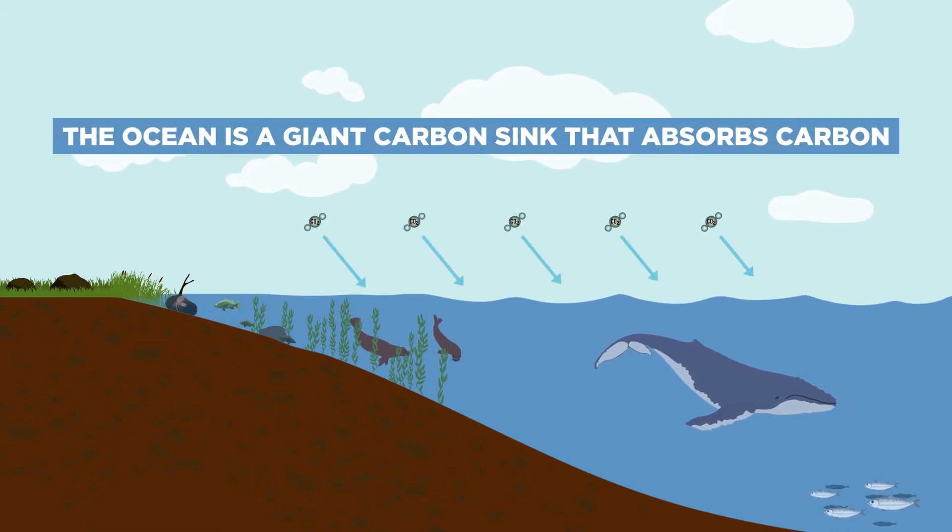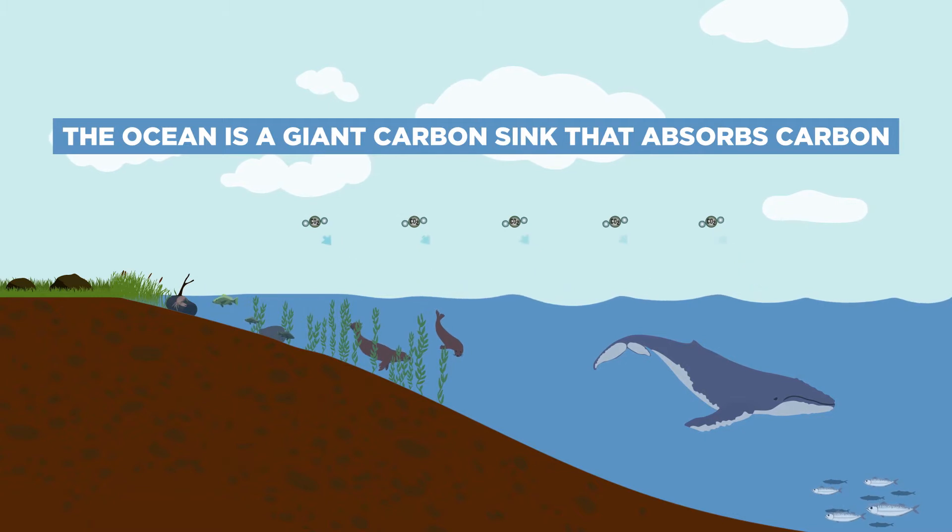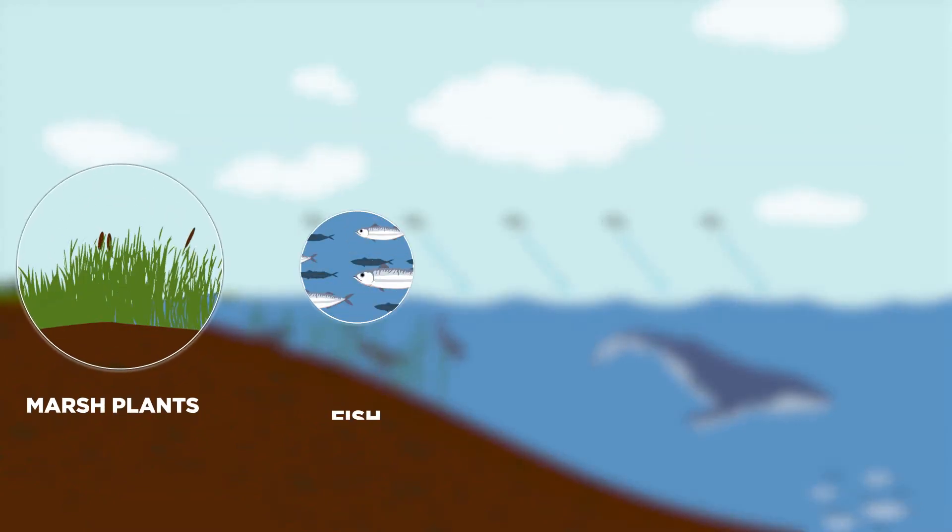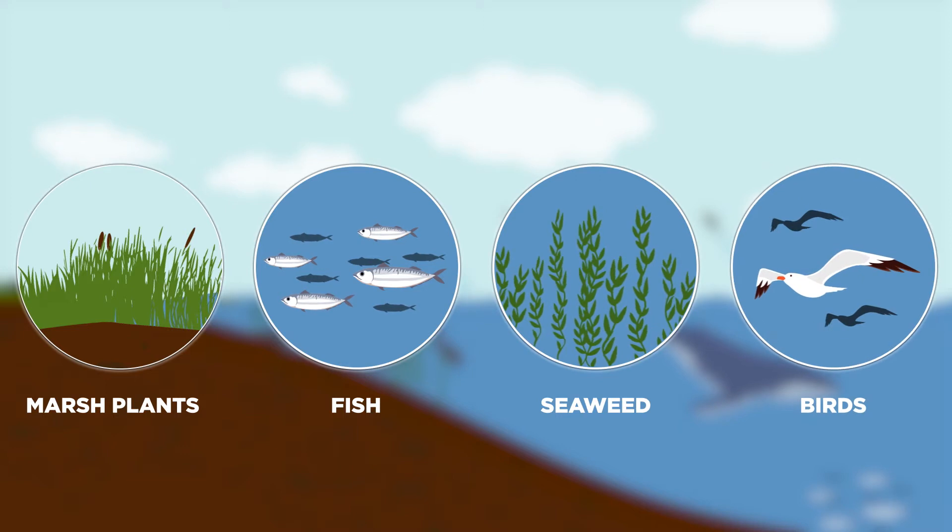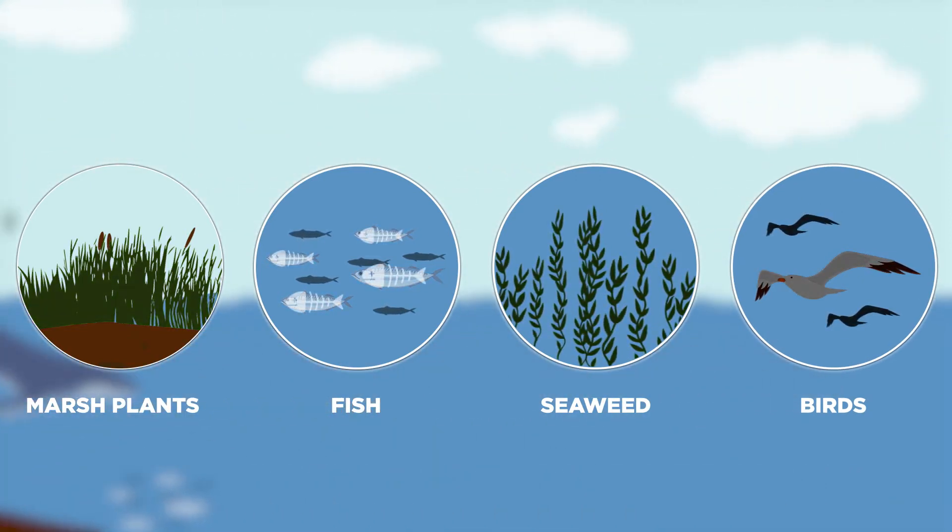The ocean is a giant carbon sink that absorbs carbon. Marine organisms from marsh plants to fish, from seaweed to birds, also produce carbon through living and dying.